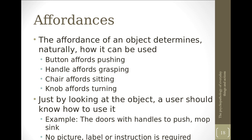Simply by looking at the object, a user should be able to know how to use it. That is very important so far as interaction design is concerned. The affordance of any object must be very clear. Previously we have seen doors with handles to push — it must be clearly understood by the user whether to push or pull that door. No extra instructions, pictures, or labels should be required to know how to operate it. If instructions are required, the affordance is not clear. For simple affordances, extra information should not be required.